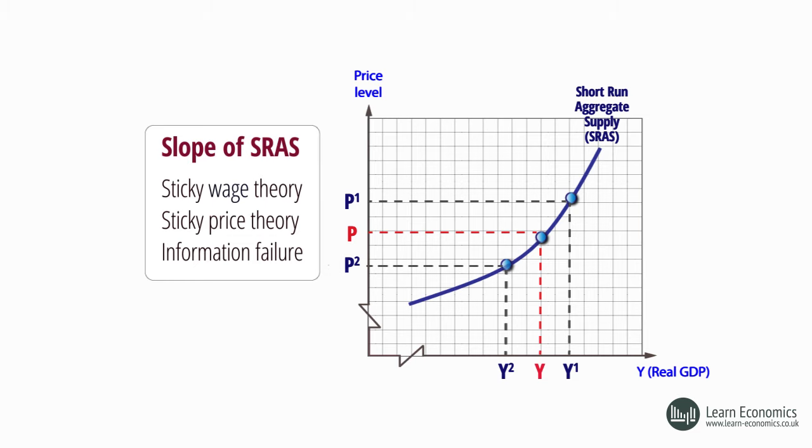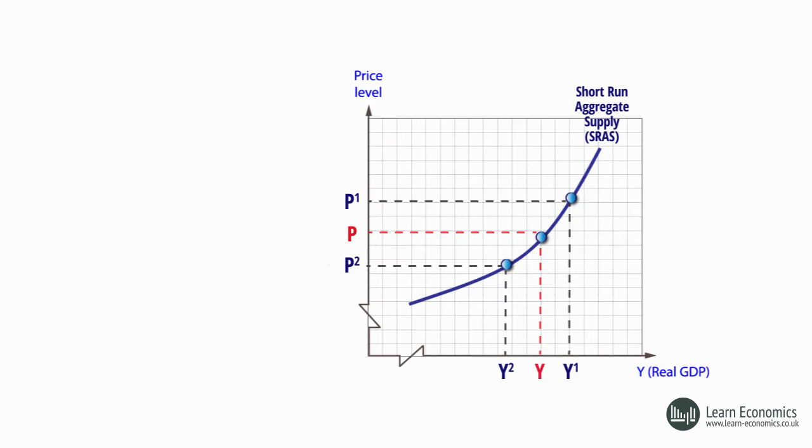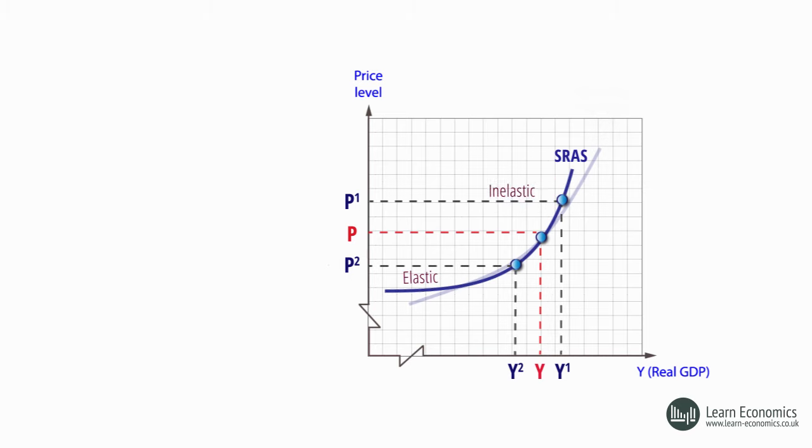The extent to which SRAS adjusts to new price levels, that is, the elasticity of short-run supply, will vary considerably from industry to industry, and depend upon how close the economy is to its natural rate of output. With no slack in the economy, it is unlikely that output can increase at all, and the SRAS curve becomes vertical.